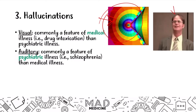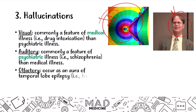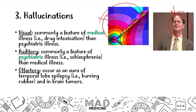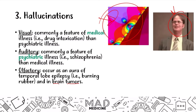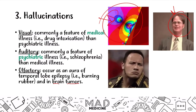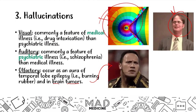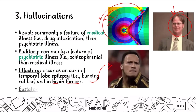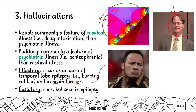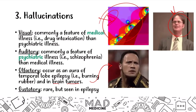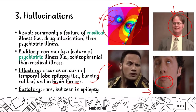Olfactory hallucinations occur as an aura of temporal lobe epilepsy — patients are going to end up smelling something, and this is indicative of temporal lobe epilepsy as well as some brain tumors. Then there are gustatory hallucinations, where a patient tastes something. This is very rare, but it can also be seen in epilepsy.